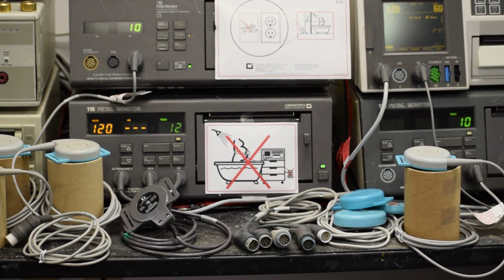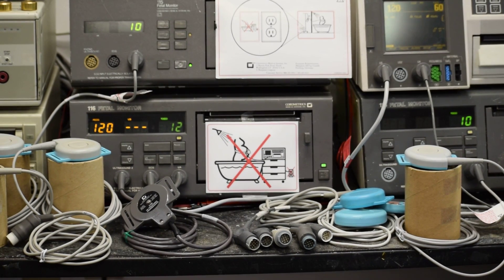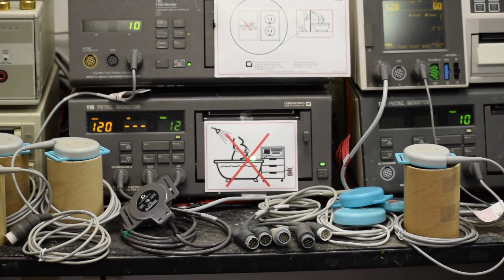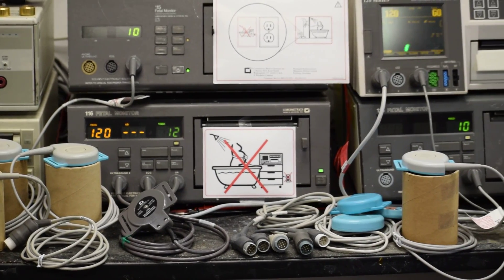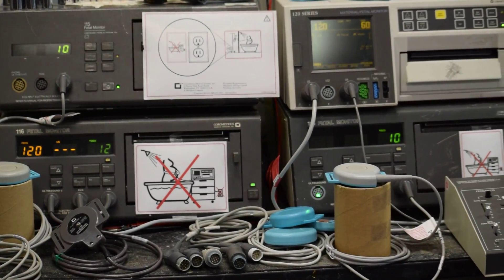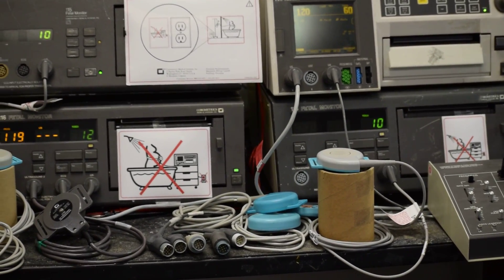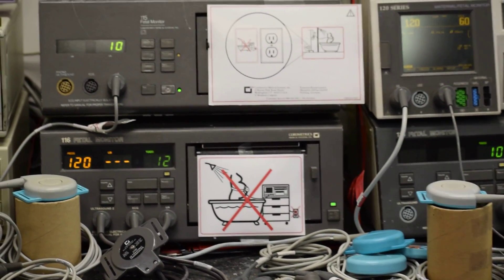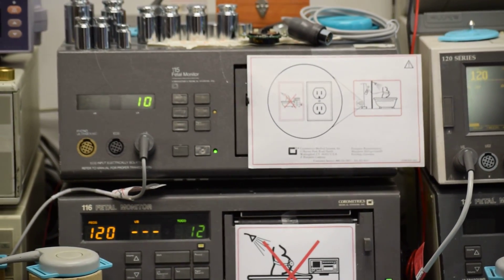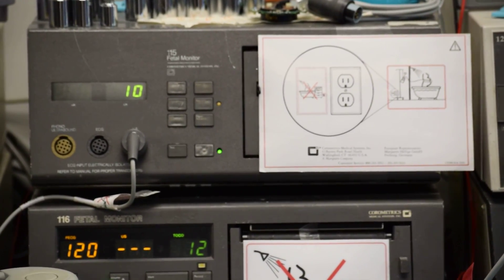Seen here are the Corometrics fetal monitors model 115, 116 in the center at the bottom, 120 series, and there's one more 116 monitor. The 115 model is very old, completely phased out. GE doesn't manufacture it anymore.